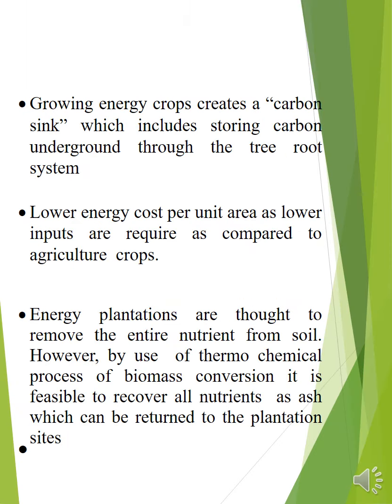Growing energy crops create a carbon sink, which involves storing carbon underground through the tree root system. Many plants absorb environmental carbon dioxide and store it in their roots, which is why this is called a carbon sink. This plantation is most useful for reducing the carbon percentage in our air.